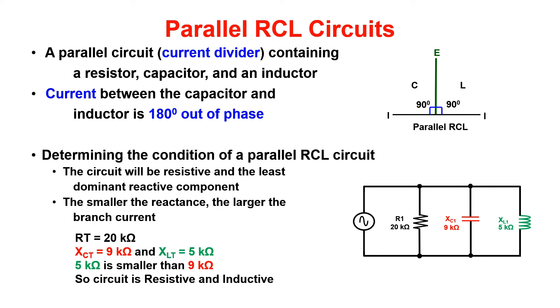Current in a parallel RCL circuit is going to be 180 degrees out of phase. The circuit will be resistive and the least dominant reactive component. In this case, the circuit is going to be resistive inductive.